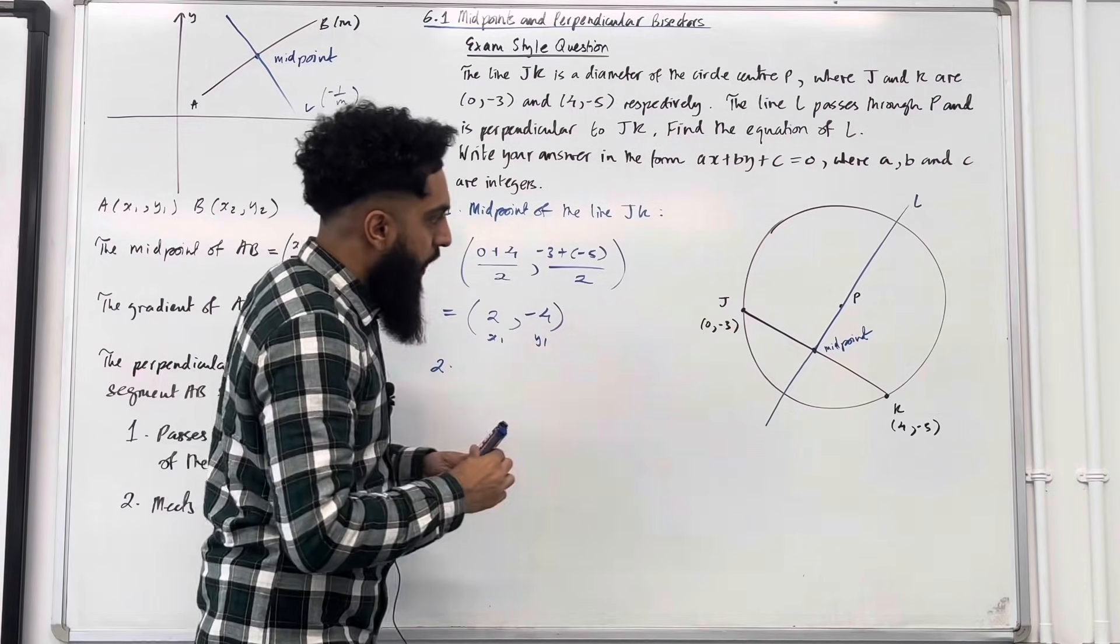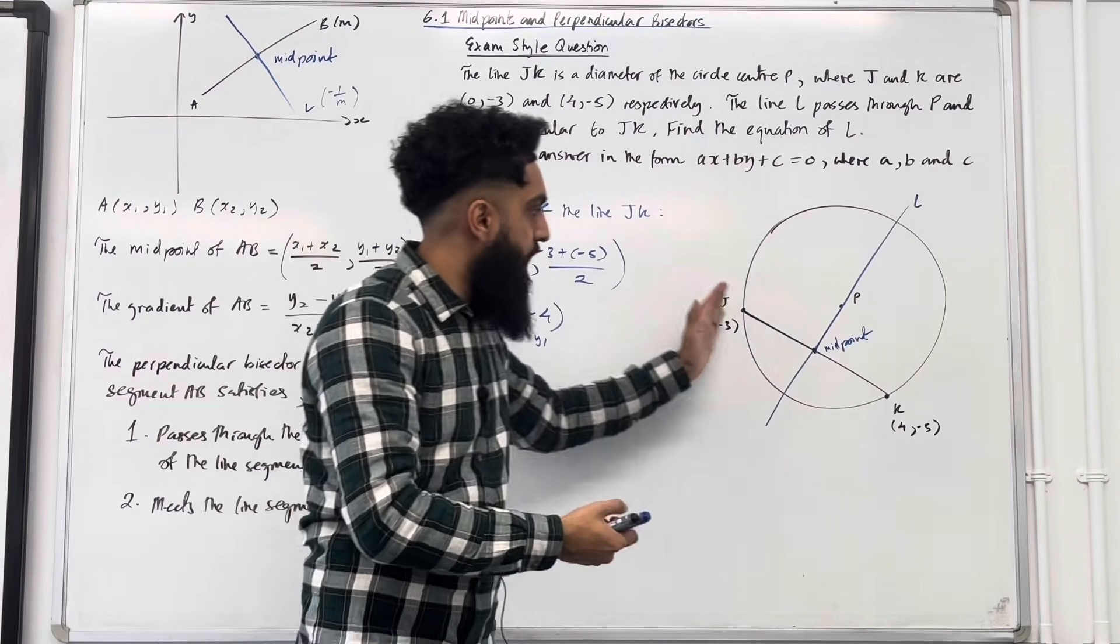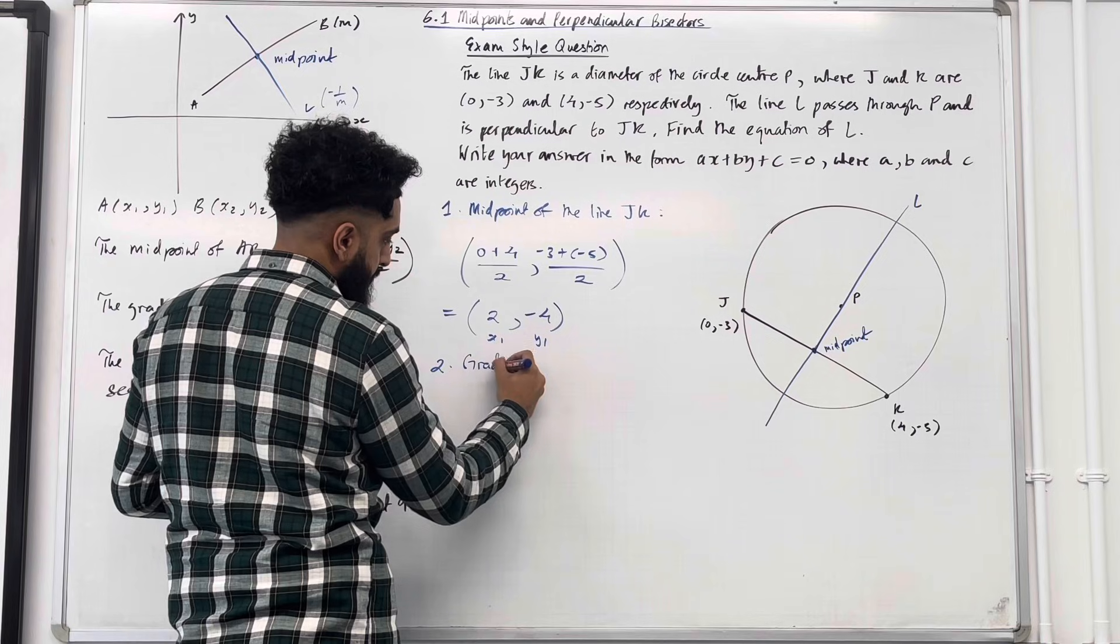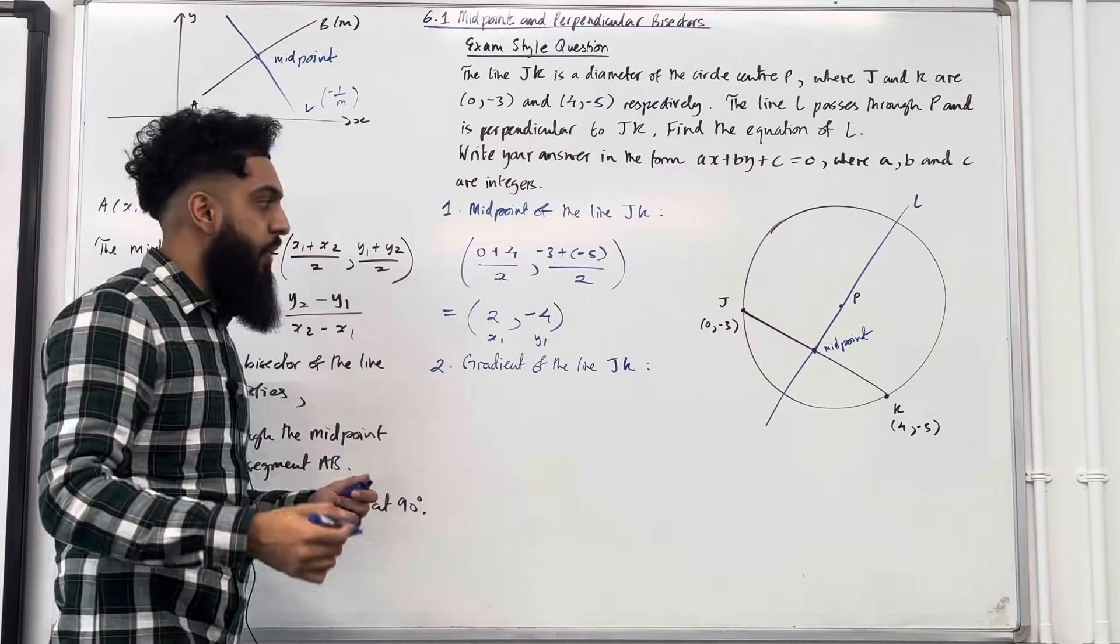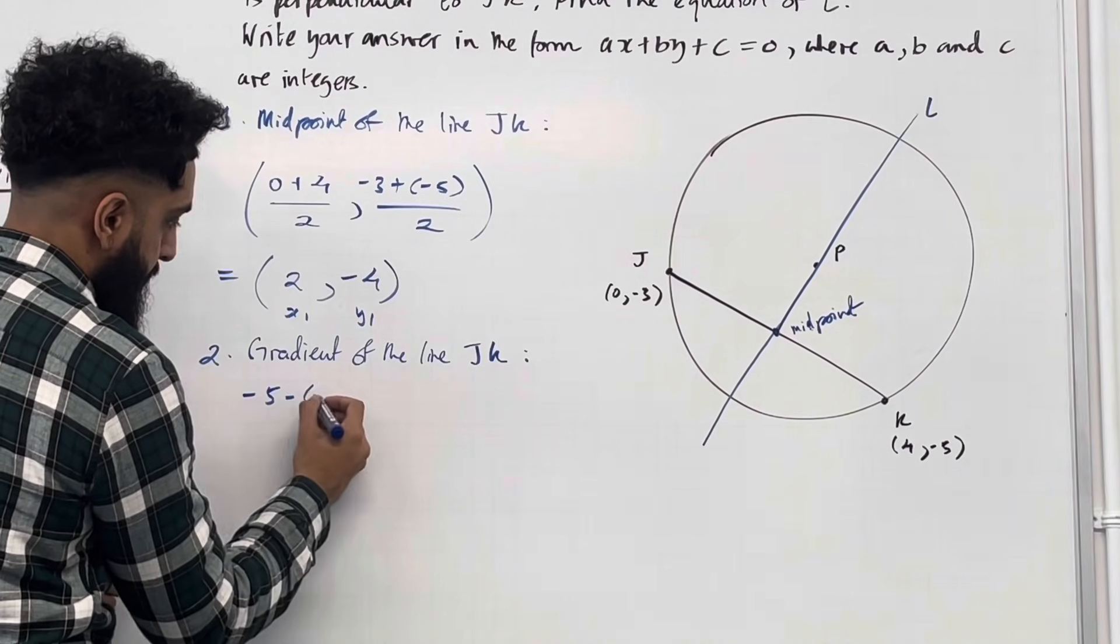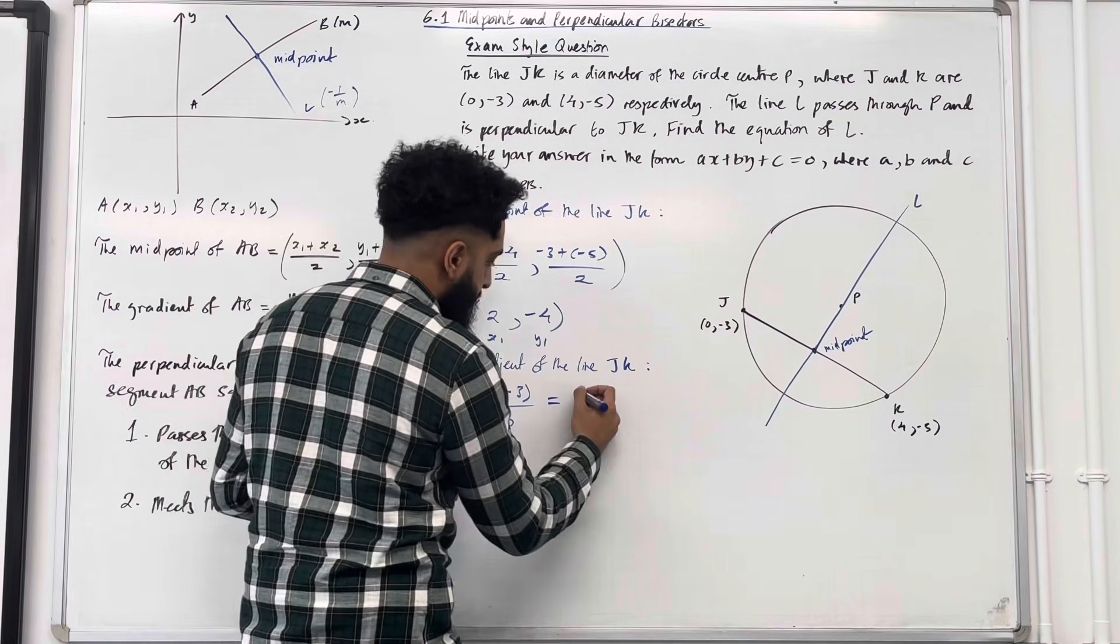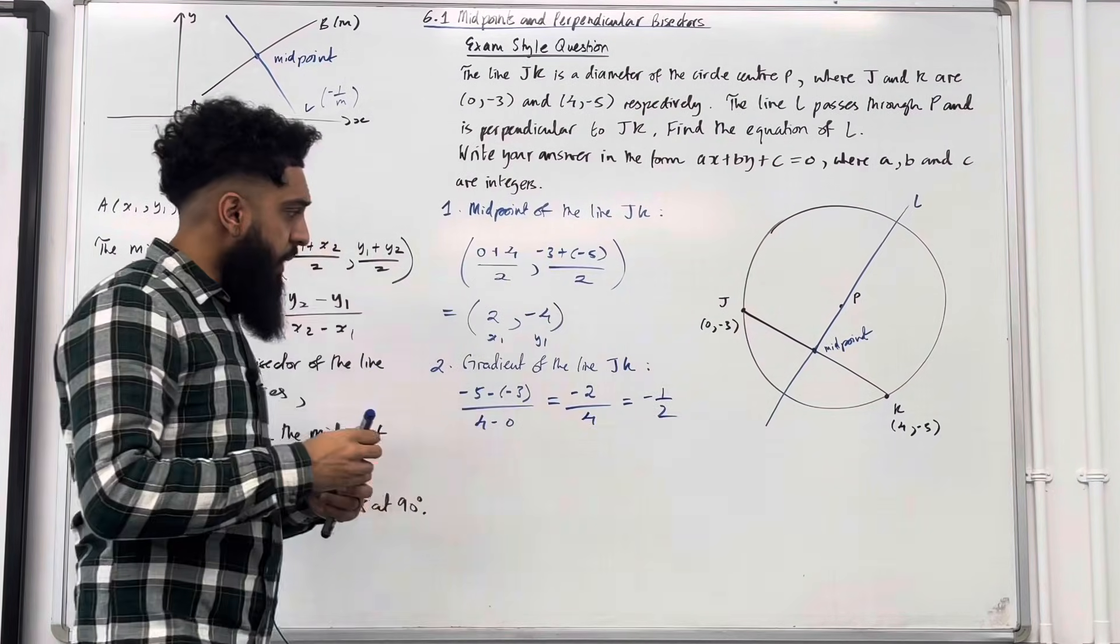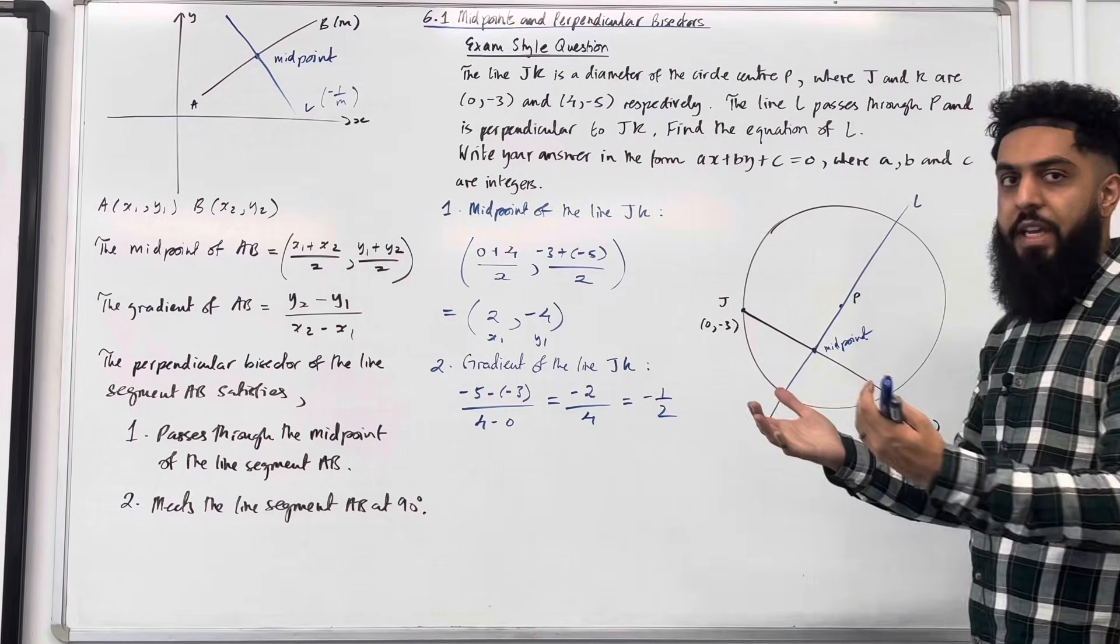Step number two, we're going to find the gradient of the line JK. Once we get that gradient, the gradient of L will be the negative reciprocal of the gradient of the line JK. Gradient of the line JK is given by y2 minus y1 over x2 minus x1. Using that formula, we have minus 5 minus minus 3 over 4 minus 0. The numerator becomes minus 2 and the denominator becomes 4. If I simplify this, I get minus a half. That is the gradient of the line JK. The gradient of the line L will be the negative reciprocal of minus 1 over 2, hence it will be 2.